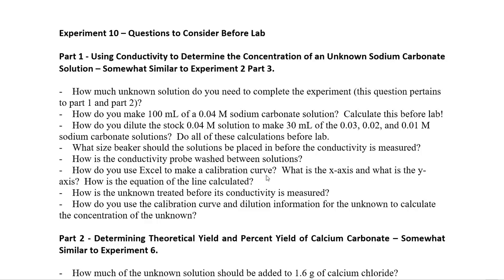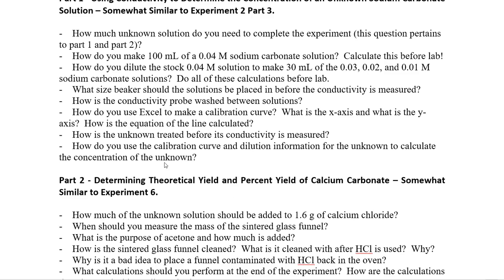What size beakers should solutions be placed in before conductivity is measured? Use a 50 milliliter beaker so there is enough depth for the conductivity probe. How is the conductivity probe washed between solutions? How do you use Excel to make a calibration curve, what goes on each axis, and how is the equation of the line calculated? This was covered in experiment two part three. How is the unknown treated before its conductivity is measured — remember the 20-fold dilution — and how do you use the calibration curve and dilution information to calculate the concentration of the unknown?